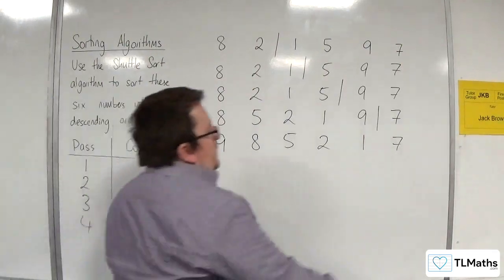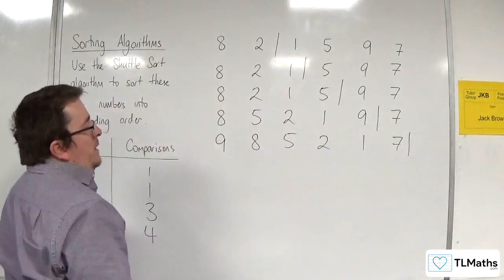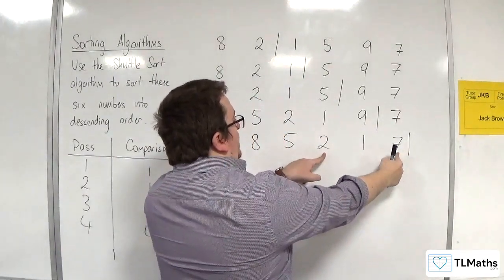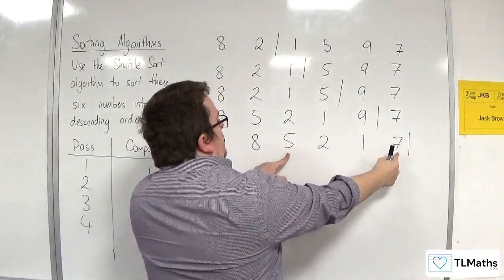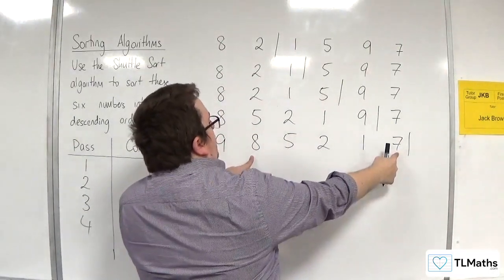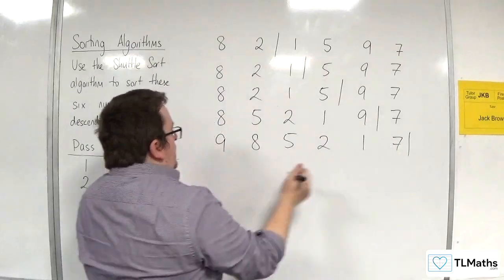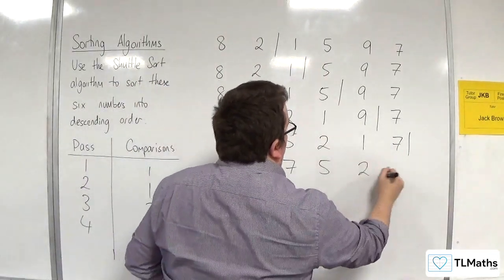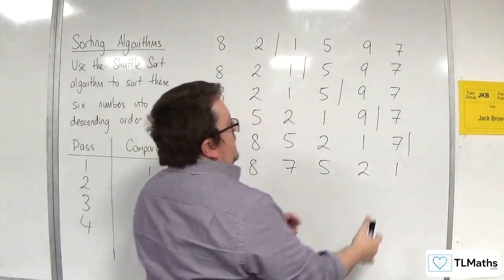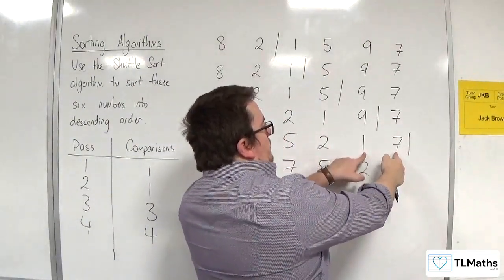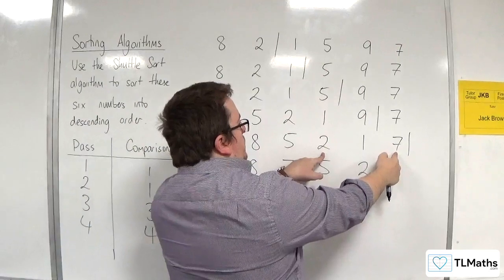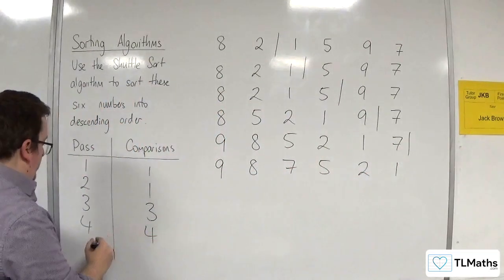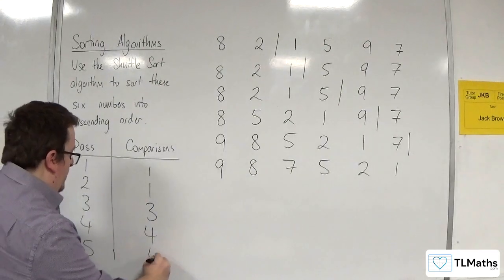Finally, we bring 7 into the mix. 7 needs to be compared with 1 — they will swap. Then with 2 — they will swap. Then with 5 — they will swap. Then with 8 — they won't swap. So the list becomes 9, 8, 7, 5, 2, 1. The 7 was compared with 1, then 2, then 5, then 8 — so there were 4 comparisons made on the fifth pass.